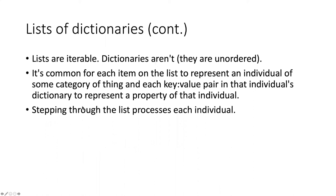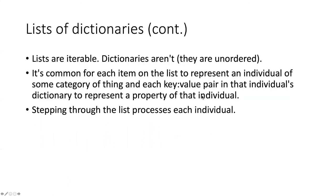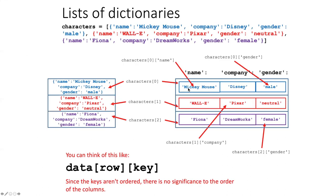It's a very common usage pattern that each of the items on the list represents an individual of some kind of thing, and then each key value pair represents some kind of property of that individual. If we look at this here, each of the rows represents a cartoon character. Row zero is one character, row one is another character, row two is another character. And then the key value pair represents a property of that individual. So this key value pair here represents a property, the name property of the first character, and this represents the company property and so on. So this row representing a particular item and the key value pairs representing some kind of property of that item is a very common sort of pattern that we see.